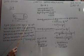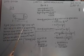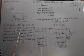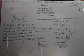A gulab jamun contains sugar syrup up to about 30% of its volume. Find approximately how much syrup would be found in 45 gulab jamuns, each shaped like a cylinder with two hemispherical ends with length 5 centimeter and diameter 2.8 centimeter.